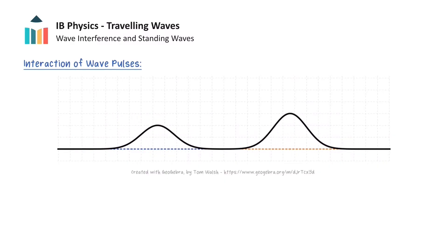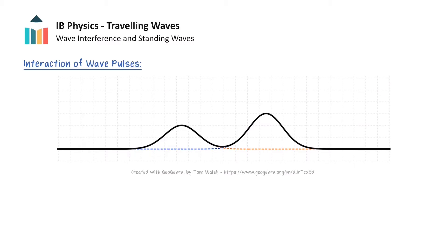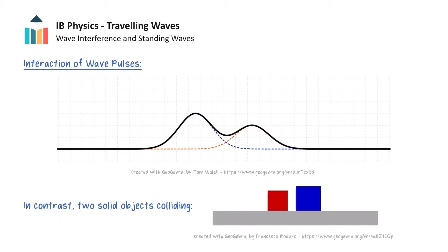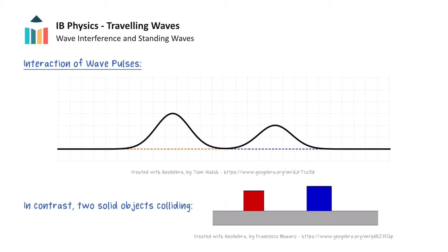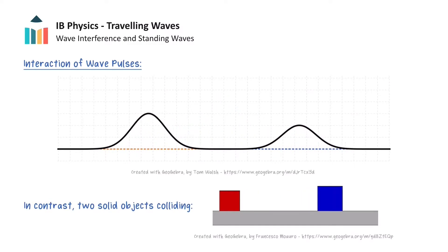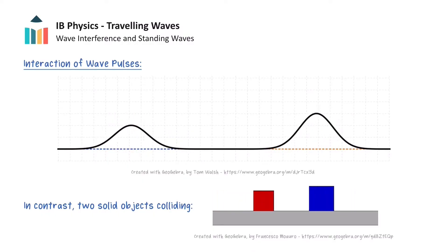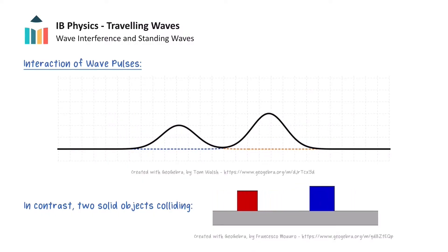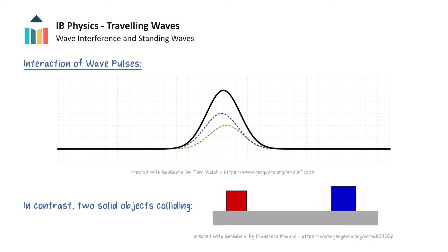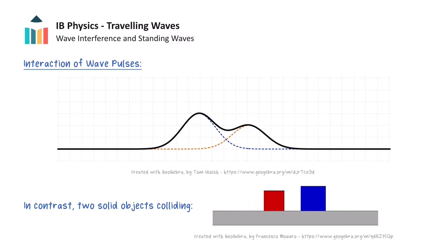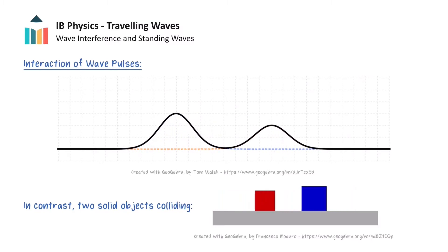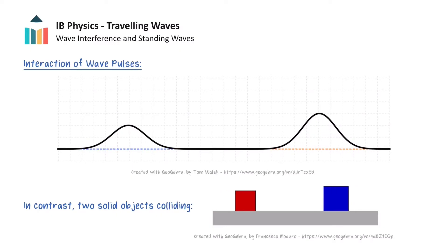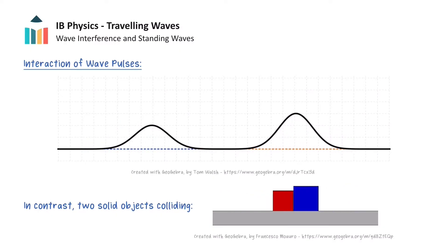Now let's contrast this with the motion of solid objects colliding with each other. When two boxes moving towards each other collide, they bounce off each other with no overlap, and they move off in different paths to their initial motion. Hence the interaction of wave pulses with one another is different from the interaction of solid objects.